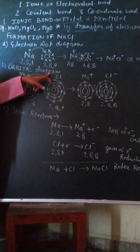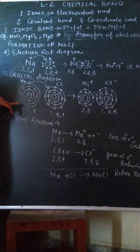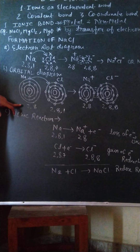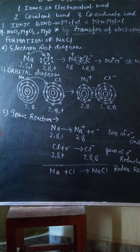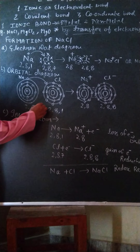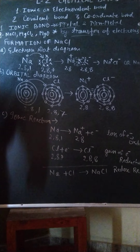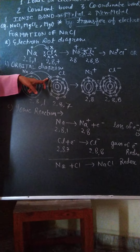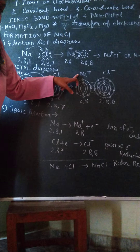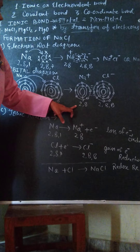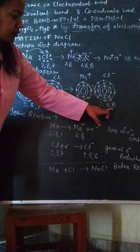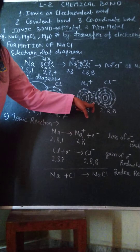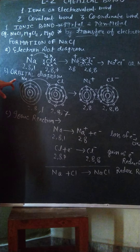The second heading is the orbital diagram for the formation of sodium chloride. First we have to make the atomic structure of sodium and then the atomic structure of chlorine. The configuration of sodium is 2-8-1 and the configuration of chlorine is 2-8-7. Sodium transfers its valence electron to chlorine. After the transfer of electron, Na⁺ is formed with configuration 2-8, and the cation and anion are held together by a strong force of attraction. This is the orbital diagram.